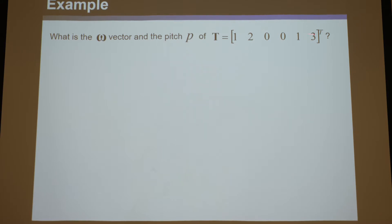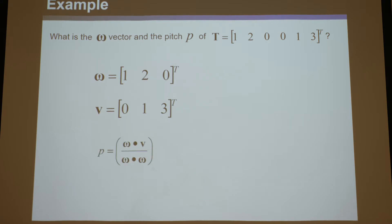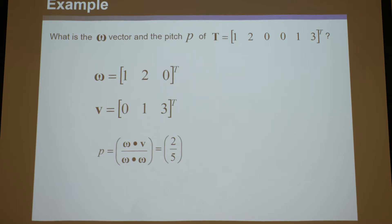Let's do an example. Say I give you a twist of this — I probably should have put units in there, but I'm just giving you the numbers. Let's identify omega as the first three and v as the last three. What is omega dot v? It would be zero plus two plus zero, so that's two. And omega dot omega? One times one is one, two times two is four, zero times zero is zero, so one plus four is five. So two over five is the pitch of this twist. Since that pitch isn't zero, you know it's not a rotation, and since it's not infinity, you know it's not a translation — it's some screw. The whole world is rotating around some screw with a pitch of two over five.